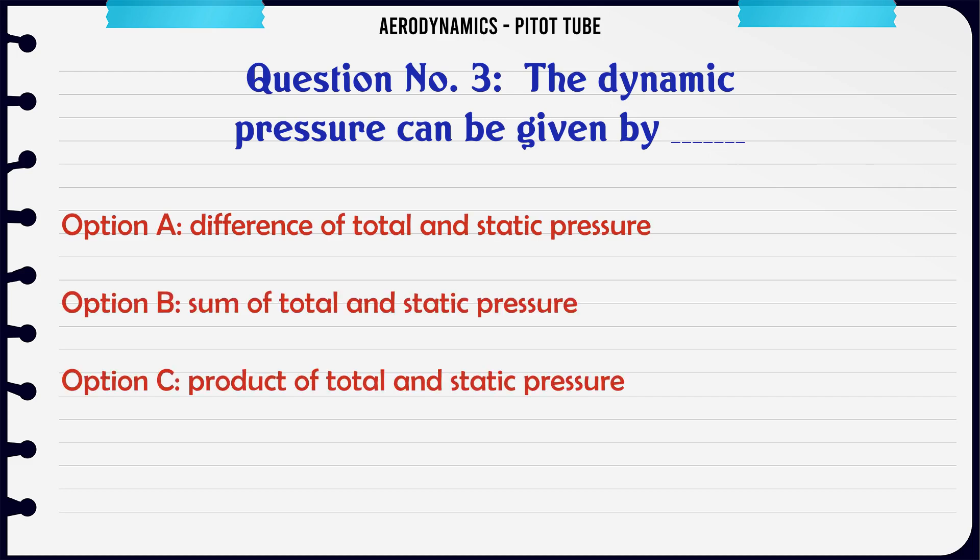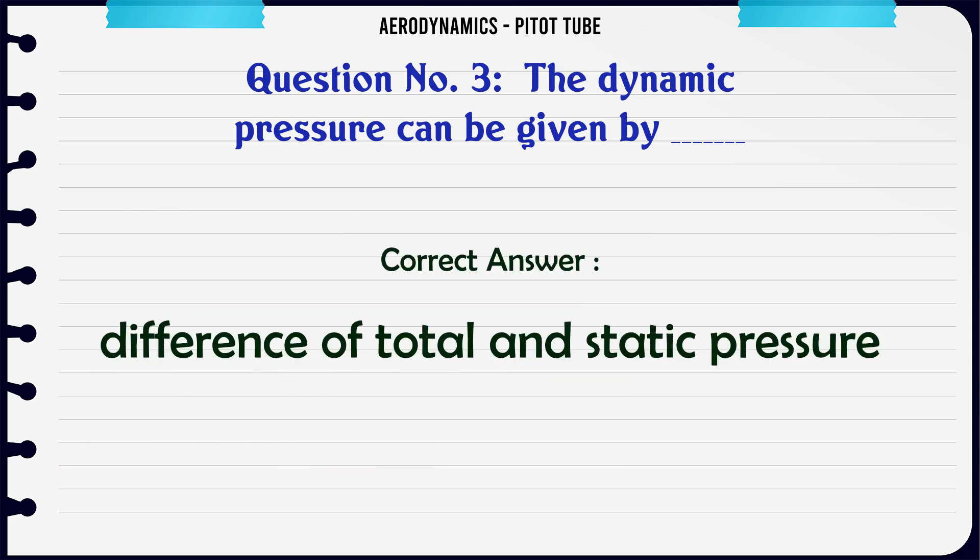Difference of total and static pressure, B. Sum of total and static pressure, C. Product of total and static pressure, D. Double of total and static pressure. The correct answer is Difference of total and static pressure.